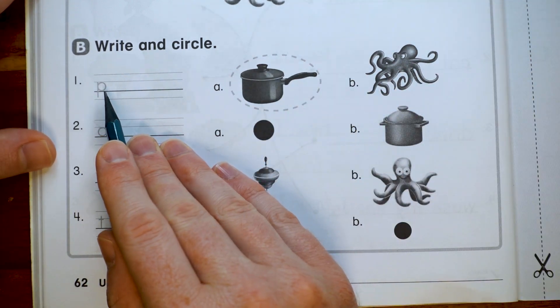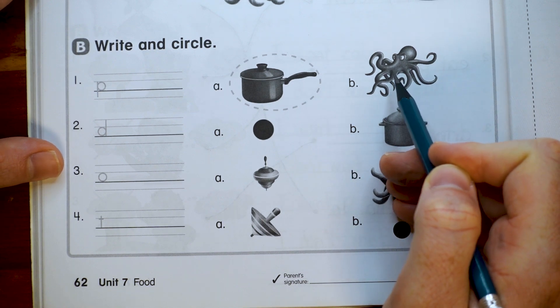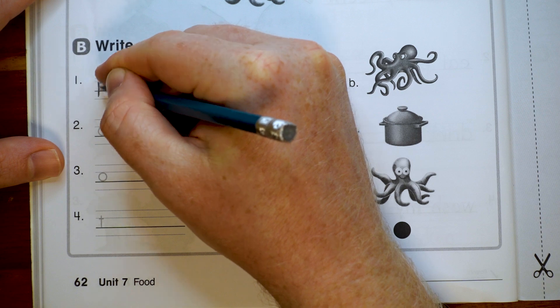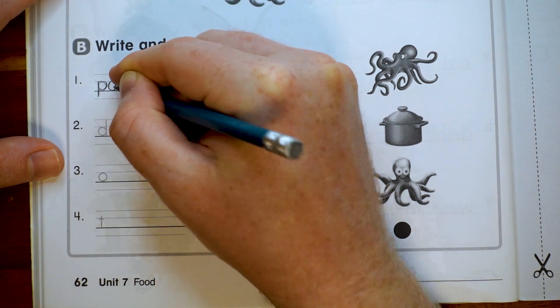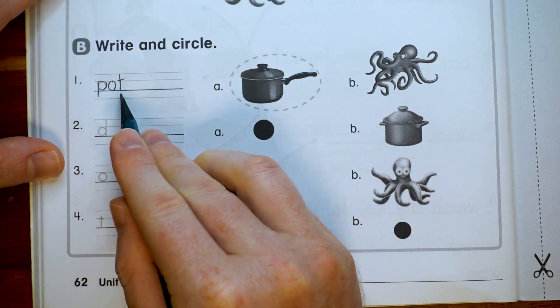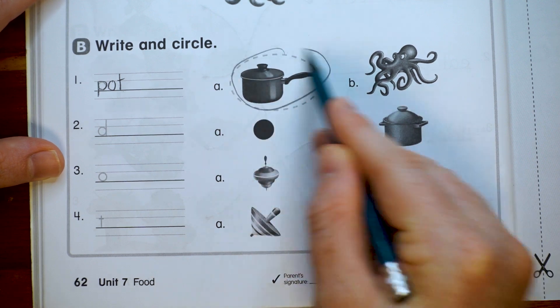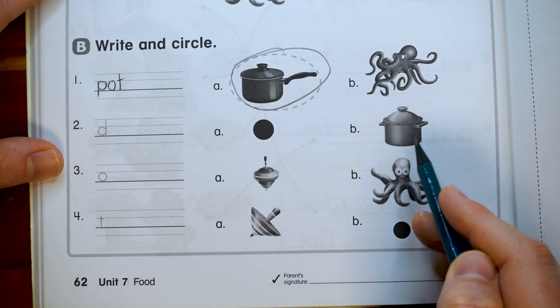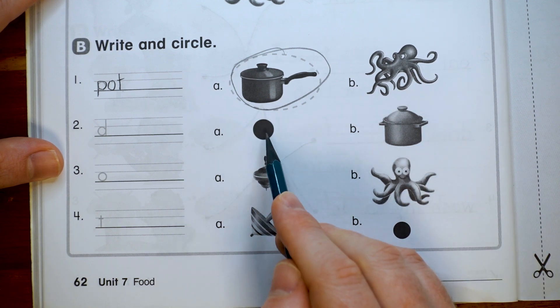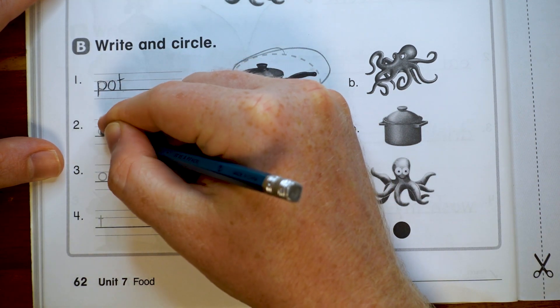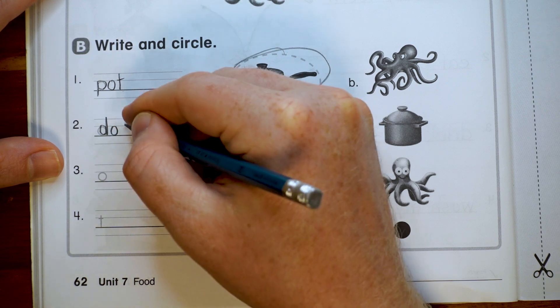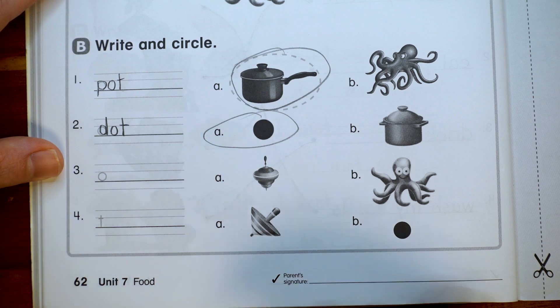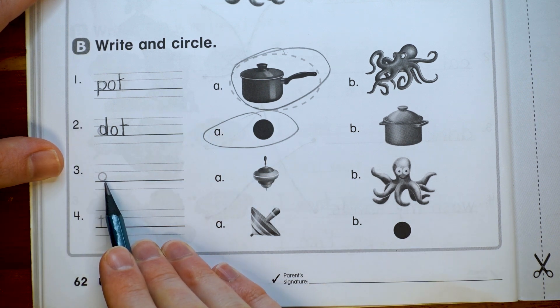All right, number one starts with a P so it's not going to be octopus, that's O, so it's going to be a pot. Pot. And circle the pot. Number two starts with a D, so should it be dot or pot? Dot. Let's write it: dot. Circle the dot.